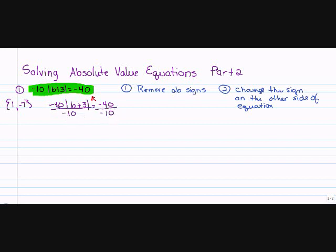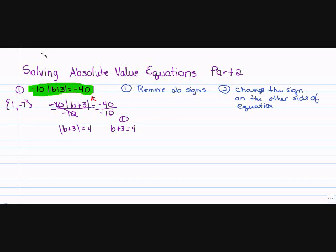Dividing both sides by negative 10 leaves me with the absolute value of B plus 3 equals — and negative 40 divided by negative 10 is 4. Now I remove the absolute value and write two equations: B plus 3 equals 4 for the first equation, and B plus 3 equals negative 4 for the second equation, because I change the sign.